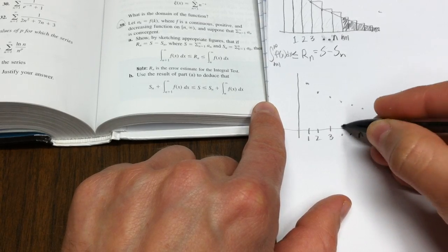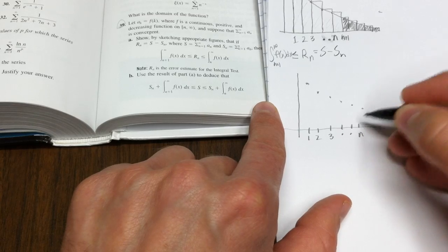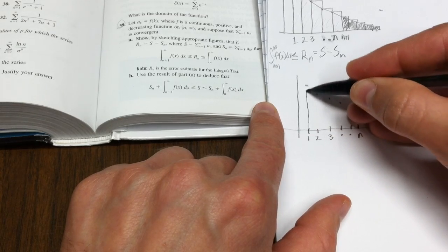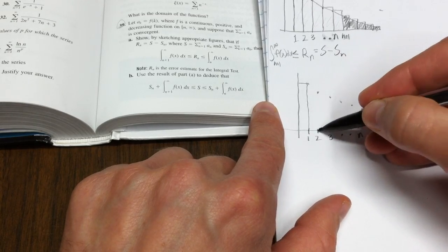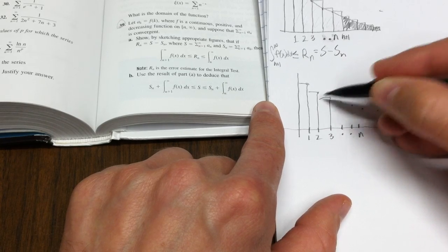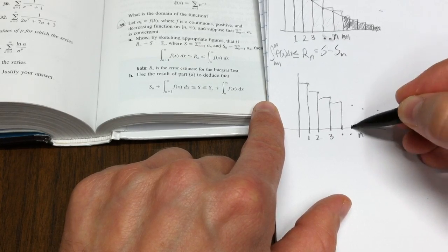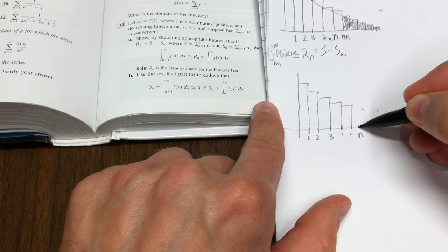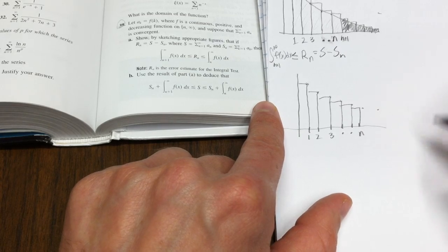So 1, 2, 3, dot, dot, N, in my creative counting scheme. Let me draw the boxes like this. There's the first box. There's the second box. There's the third box. There's the fourth. Here's the nth box.